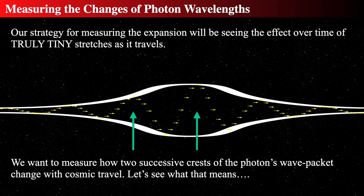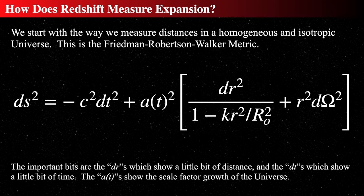Let's see how that actually works mathematically. How do we measure distance in cosmic time? The way we measure distance in a homogeneous and isotropic universe with uniform expansion is with this metric. This metric describes a universe that is uniformly expanding or contracting, has uniform curvature, and is isotropic and homogeneous throughout. The left-hand side, ds², is a tiny distance in space-time, equal to c²dt² plus terms in brackets describing spatial distance.